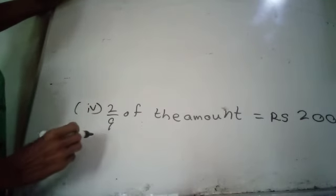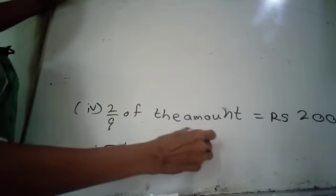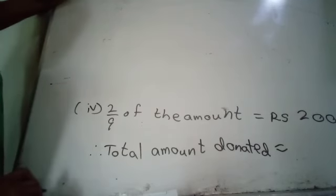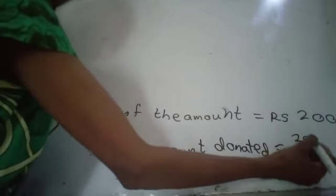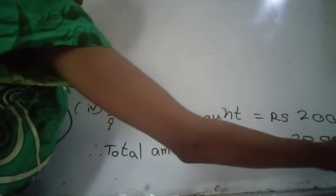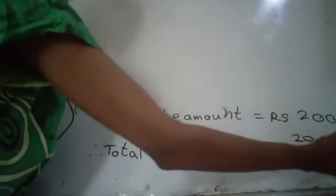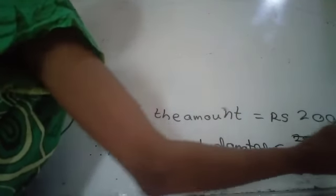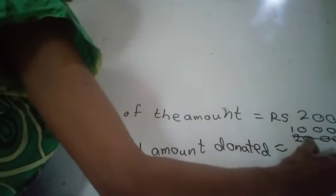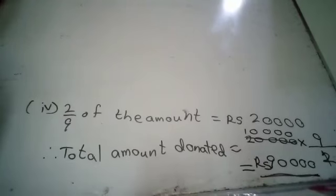To find the total amount donated: two-ninths of the amount equals 20,000 rupees. So one-ninth equals 20,000 divided by 2, which is 10,000. Then the total amount equals 10,000 multiplied by 9, giving 90,000 rupees.